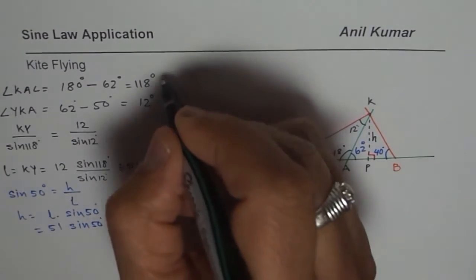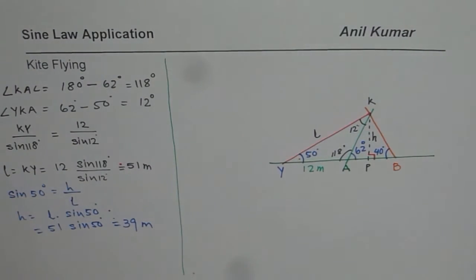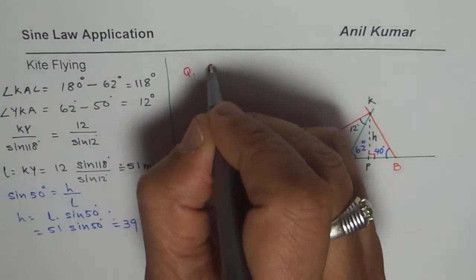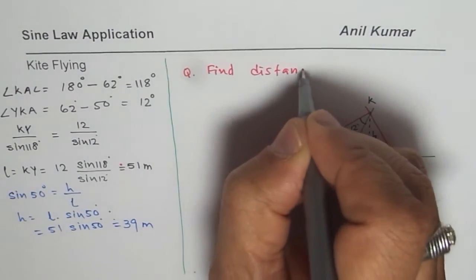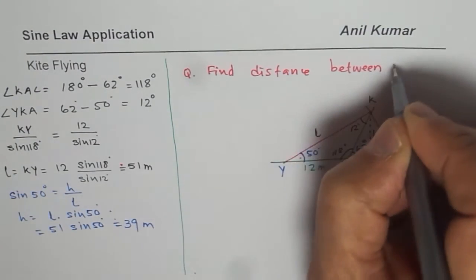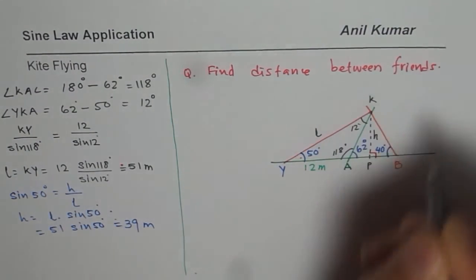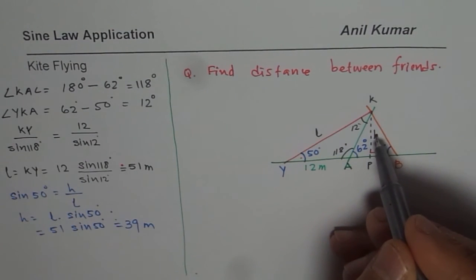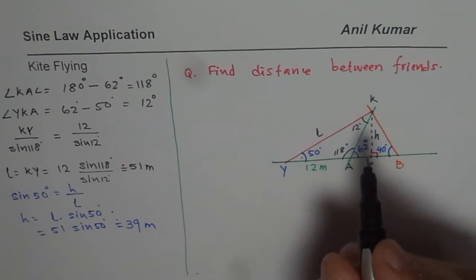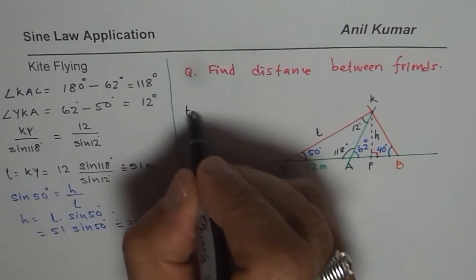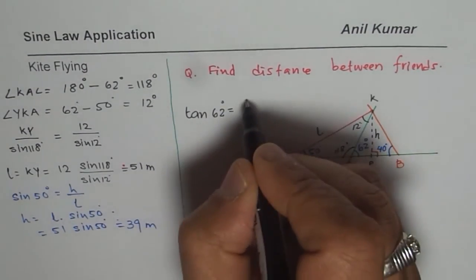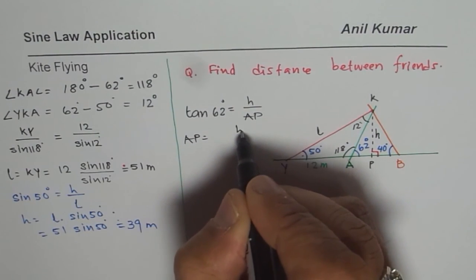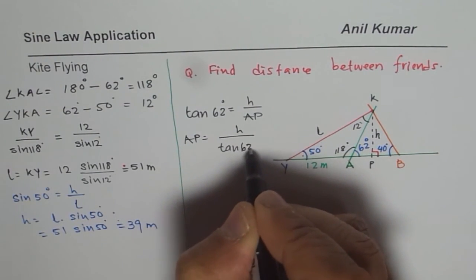The question for you is: find the distance between the friends. What is the distance from A to B? Now since we know the height, we can use the tan ratio. Let us find distance AP first: tan of 62 degrees equals height over AP, so AP equals height over tan of 62. I'm leaving these calculations for you.